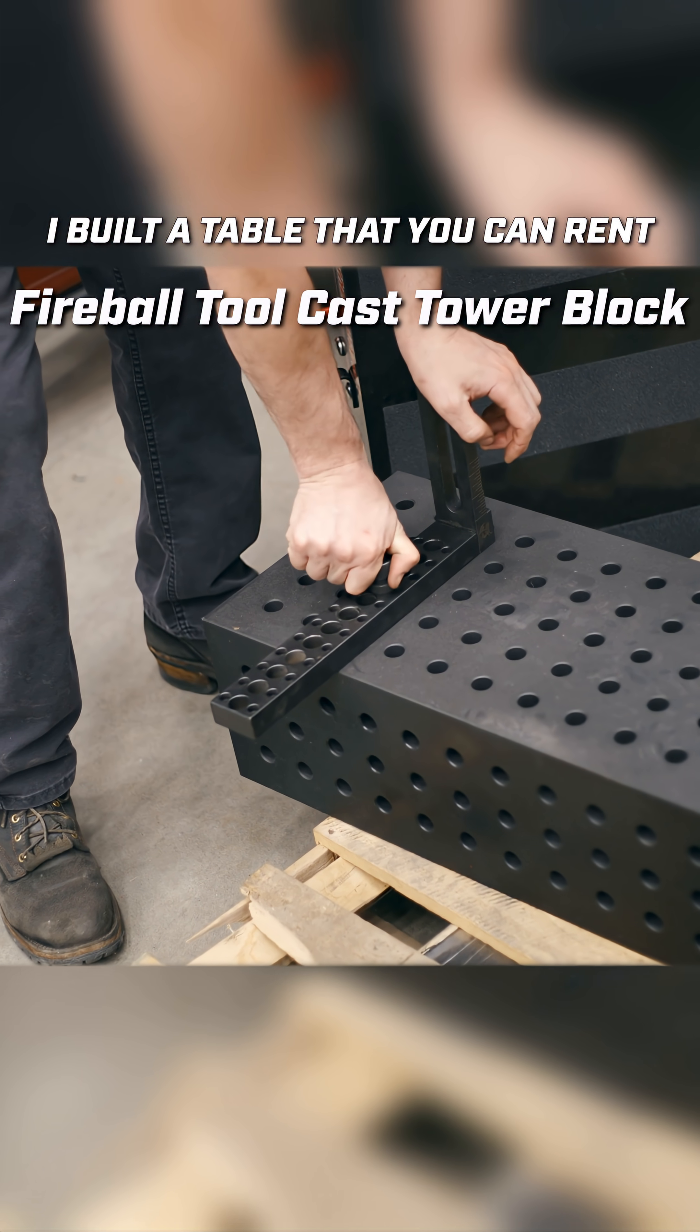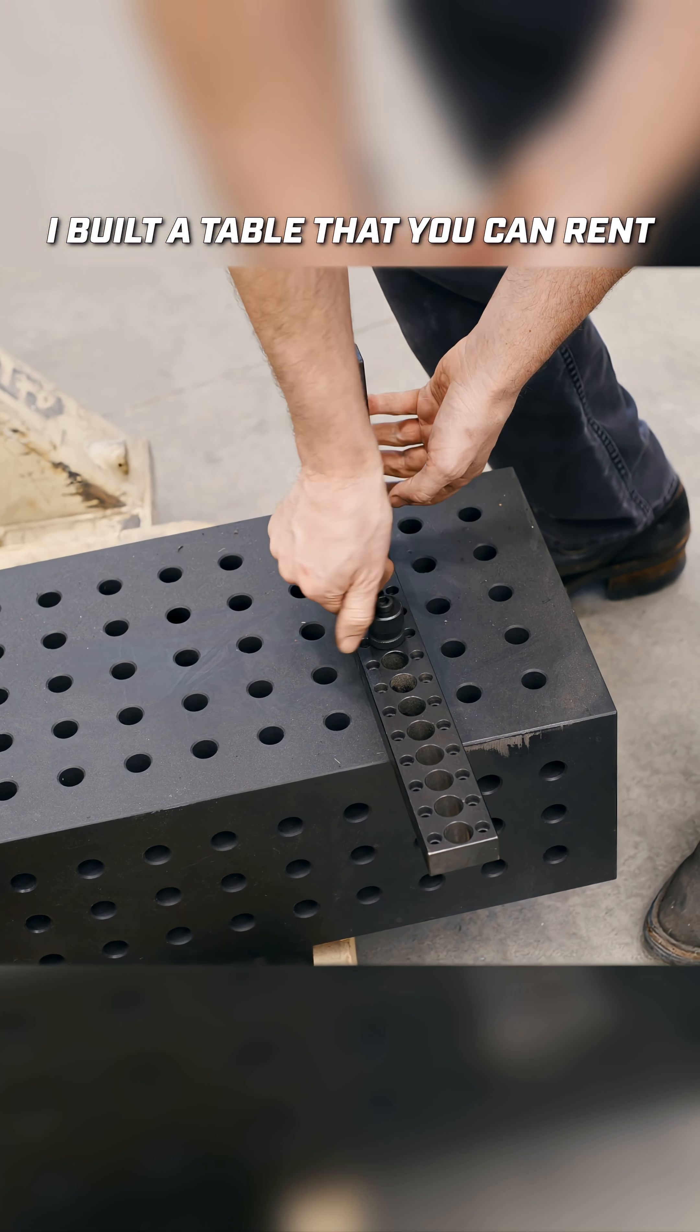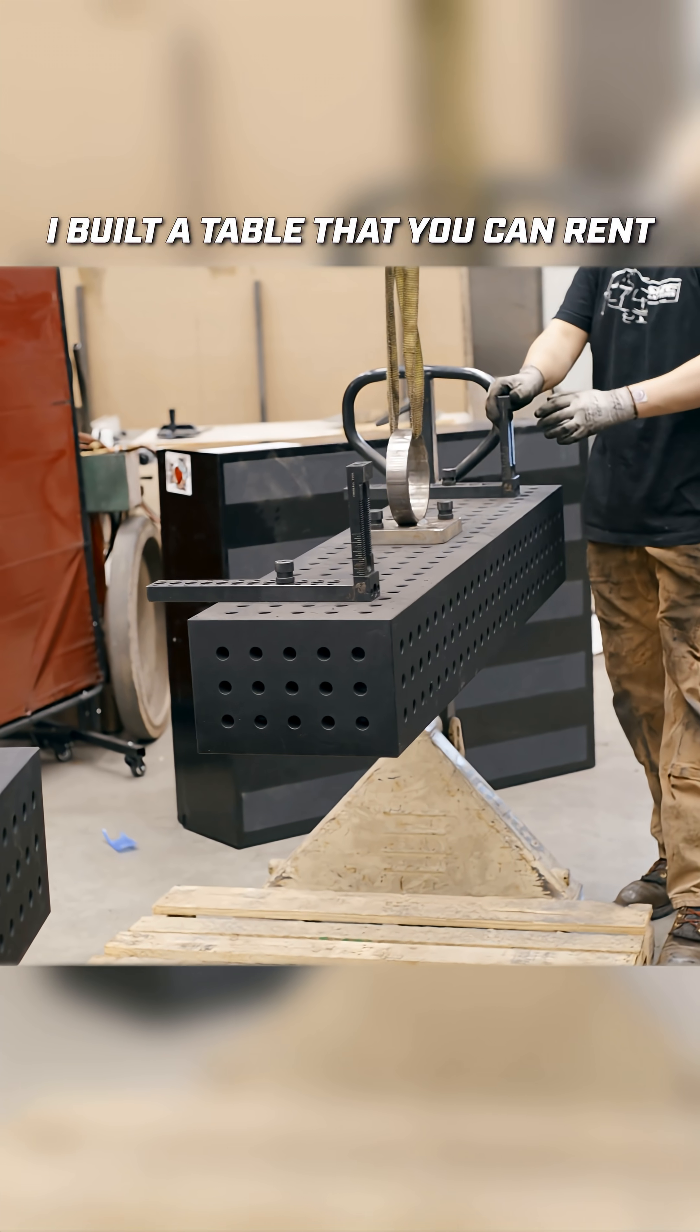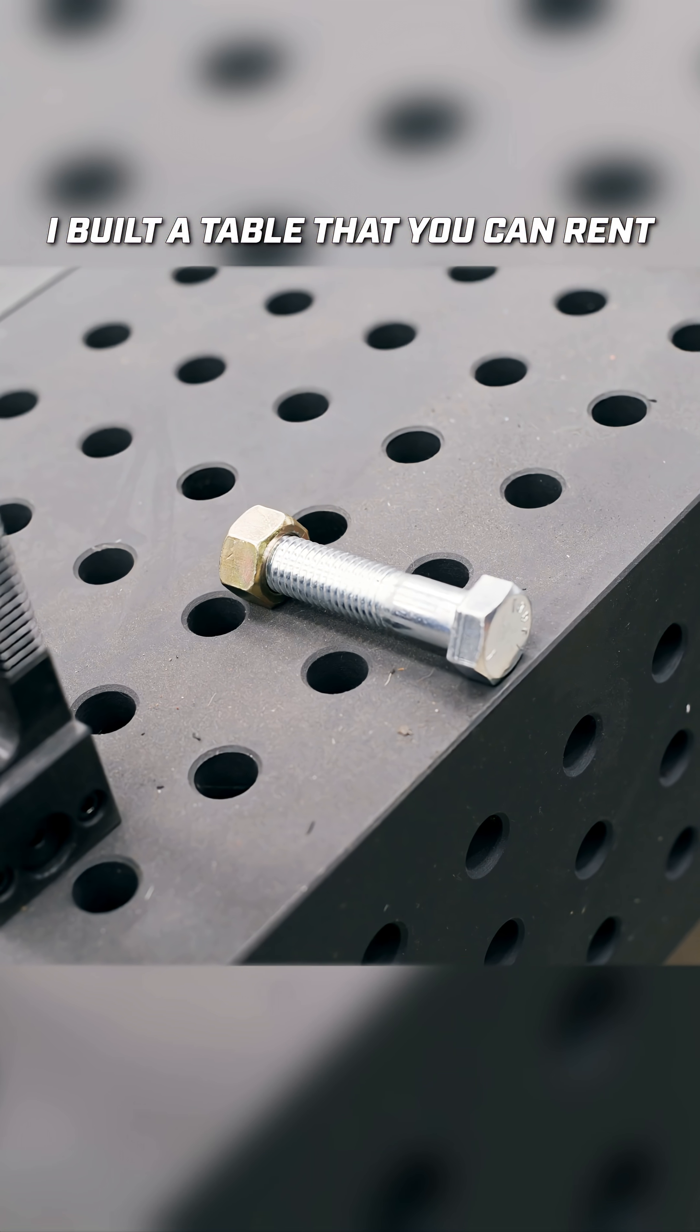We're going to put a fixture on the left and a fixture on the right. This is basically going to be a hook, and it's going to sit right on top of the table surfaces. There we go, now we can put the bolt in.